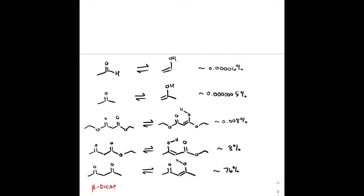The topic today is reactions at the alpha carbon — not just formation of an enol or enolate, but what we do with it afterward. The percentages shown on the right are the percentages of enol forming. For the aldehyde and ketone, we get essentially nothing. But as we change the functional groups surrounding the carbonyl, the percentage of enol increases. For the beta-dicarbonyl compound, the dominant species is actually the enol at 76%, due to intramolecular hydrogen bonding.